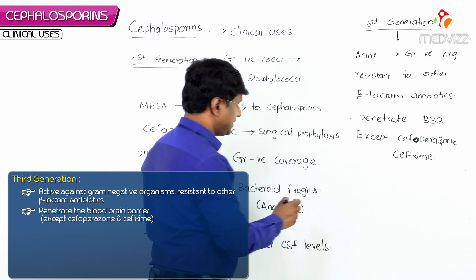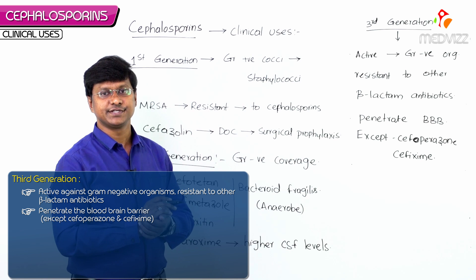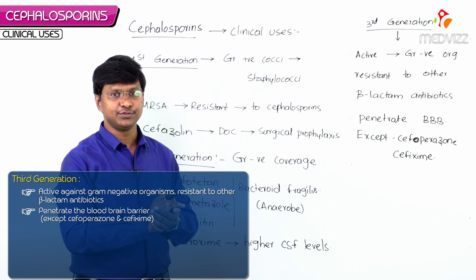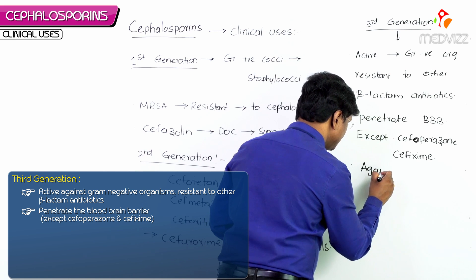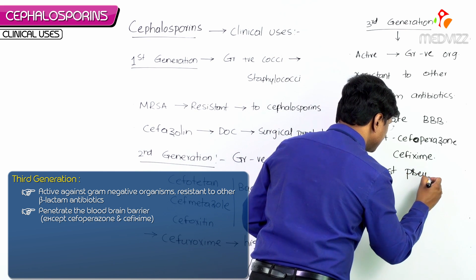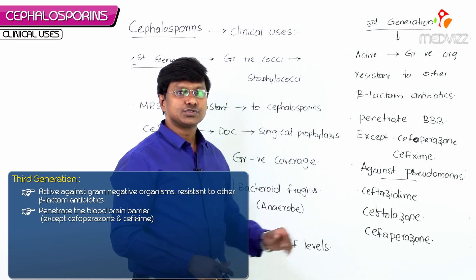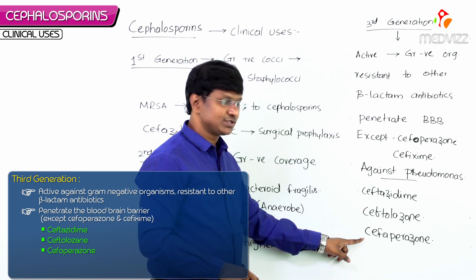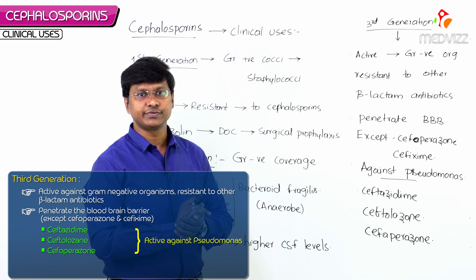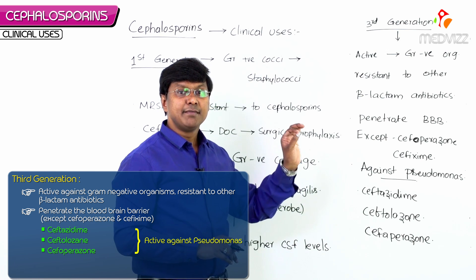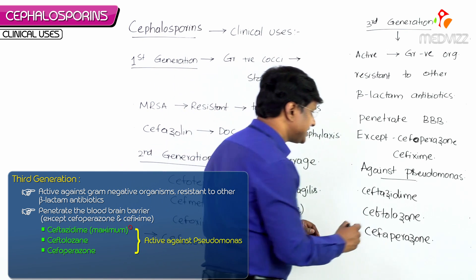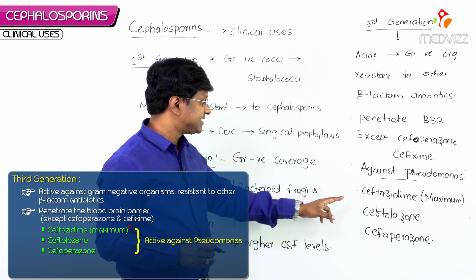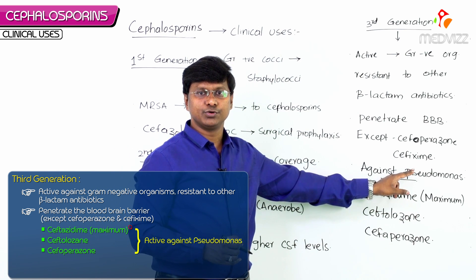Some third generation cephalosporins are active against Pseudomonas. These include ceftazidime, ceftolazine, and cefoperazone. Among these, ceftazidime has the maximum activity against Pseudomonas — this is a high-yield multiple choice point.